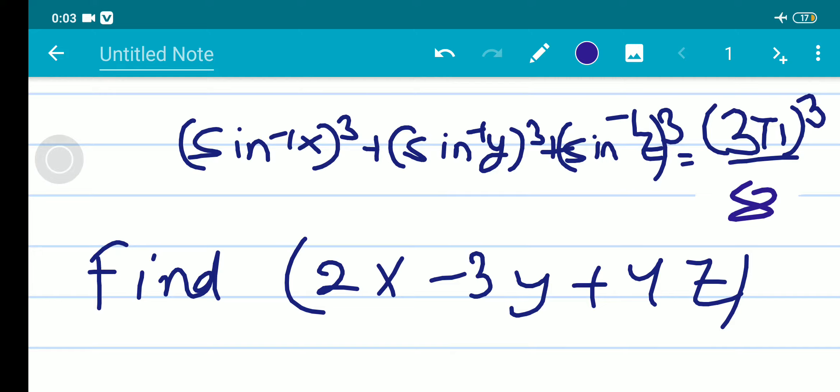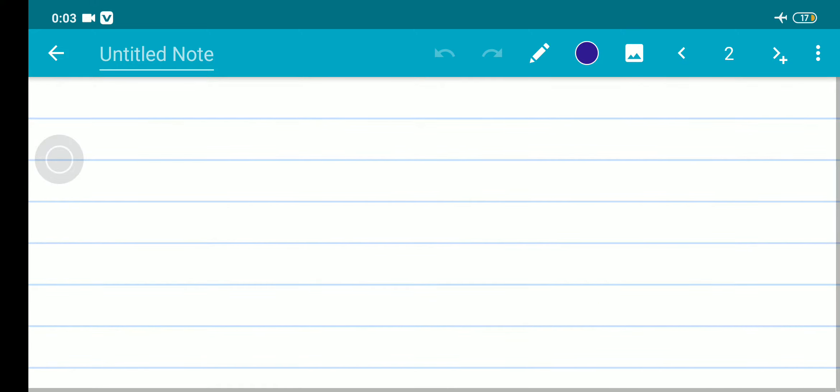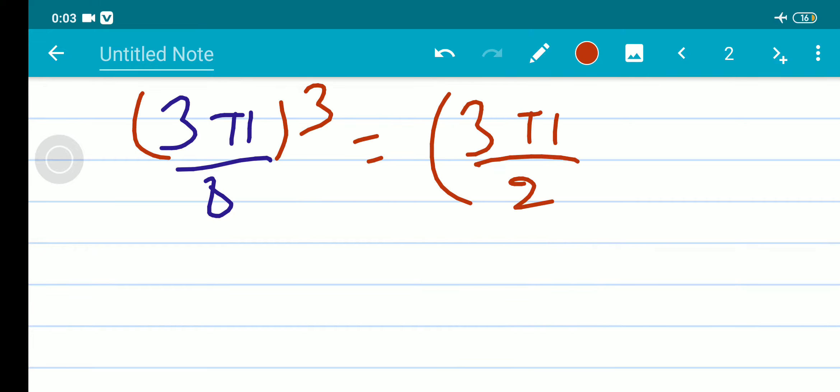So it is given that 3π³/8. Let's see. 3π³/8 which is equals to (3π/2)³, isn't it?